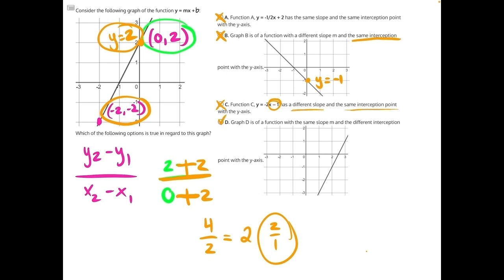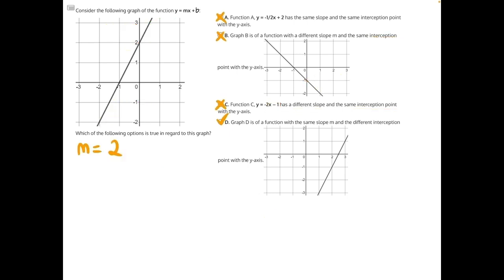At that point, you can mark D and move on with the rest of the test. But for the sake of the video, I'll go back and show you why D is correct. Answer choice D says graph D is of a function with the same slope and a different interception point with the y-axis. The different interception point is correct because it seems to be intercepting the y-axis somewhere down here, maybe around negative four or negative five, when over here in our original function it intercepted at y equals positive two. So that much is correct.